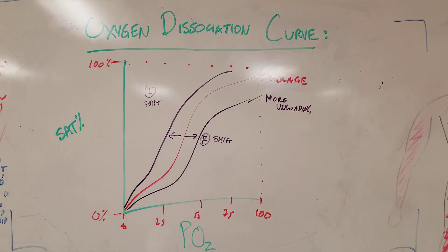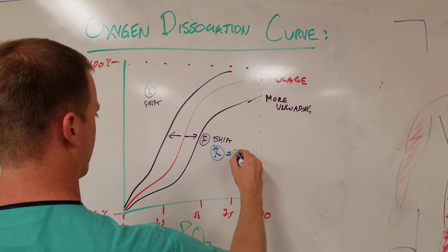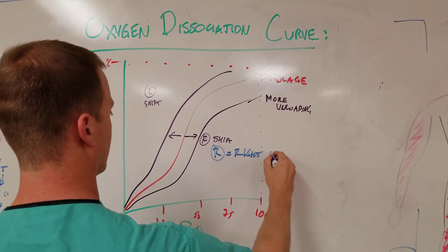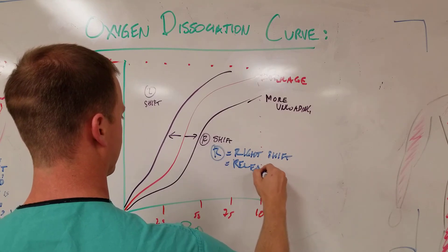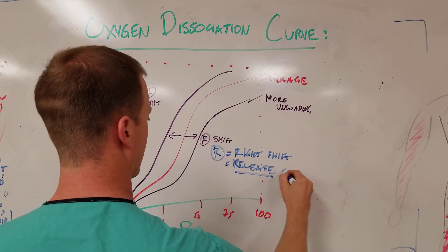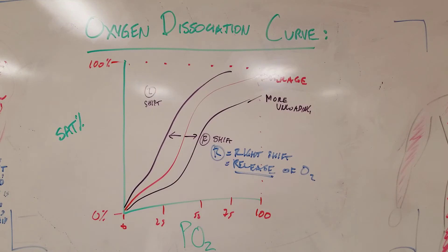How can you remember what causes a right shift, what causes the release? And so the way I remember that is that R equals right shift equals release of O2, right? And so this is an environment that needs more oxygen. So we're having this right shift or oxygen dissociation curve because something is going on in that tissue that's causing the hemoglobin to offload or to unload its oxygen or to release its oxygen, right shift, R, release, right shift.